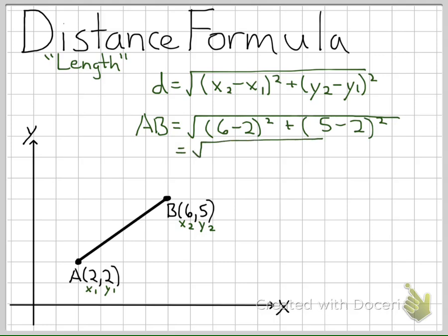I then simplify. 6 minus 2 is 4 squared. 5 minus 2 gives me 3 squared. I square the two values: I get 16 plus 9, which becomes the square root of 25. So I can say that AB is 5 units in length.